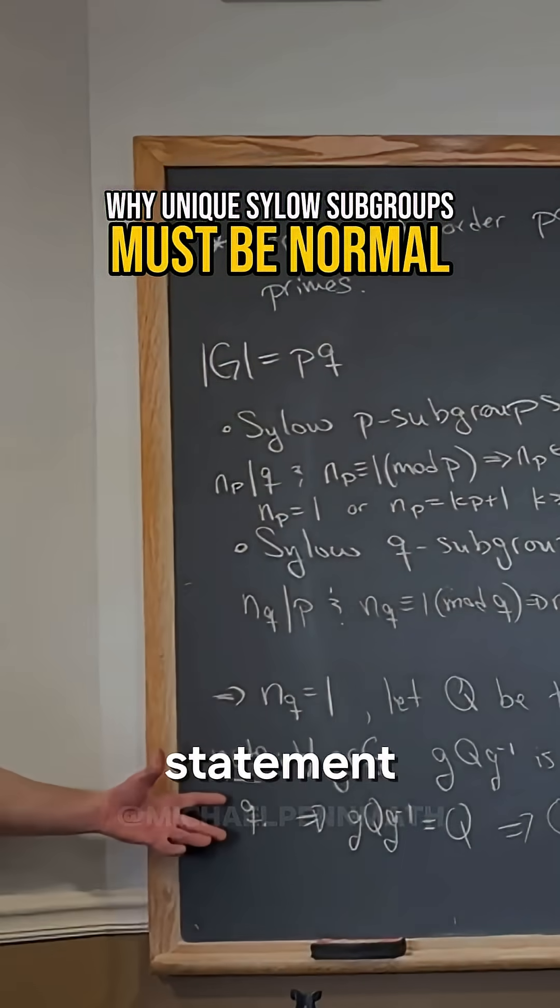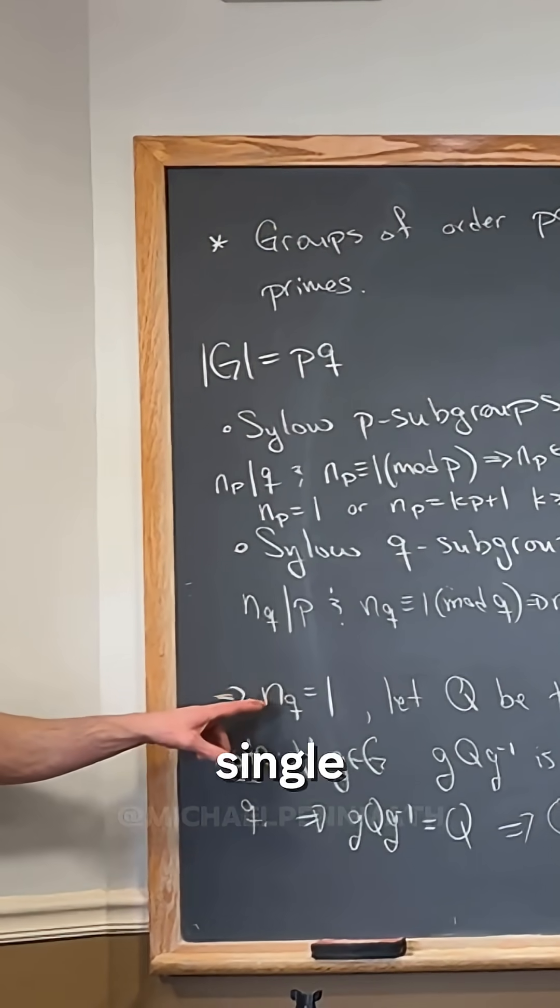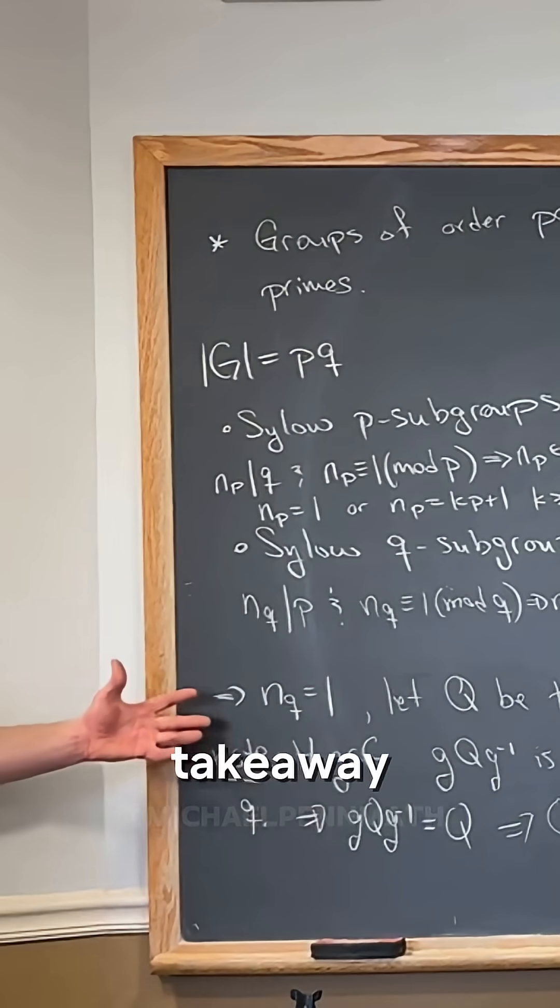This statement that we did right here is super important. This means that every time you have a single Sylow subgroup, that single Sylow subgroup has to be normal. That's the takeaway from this.